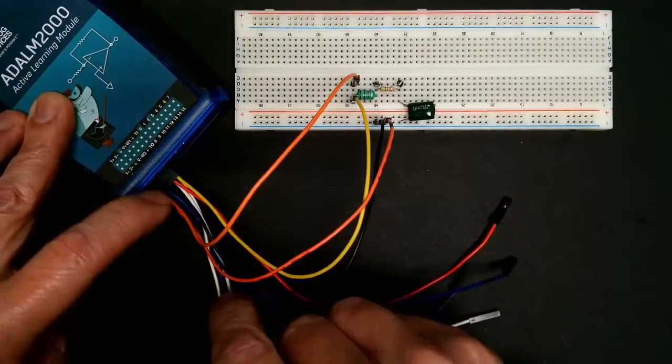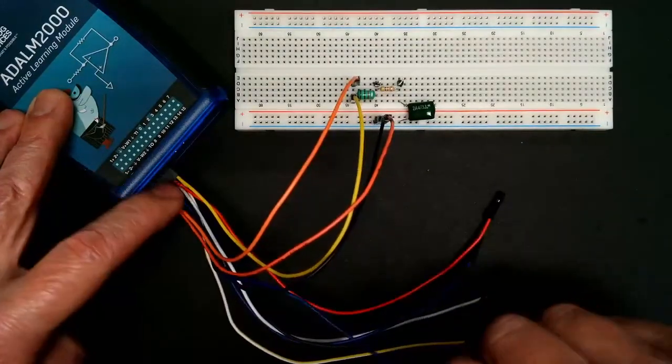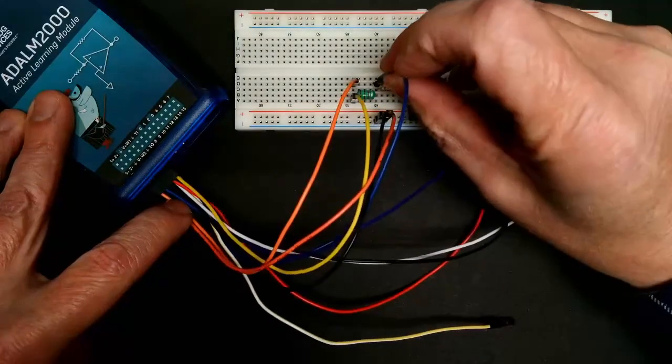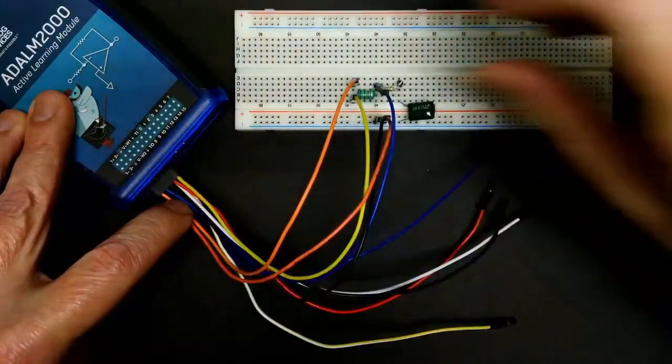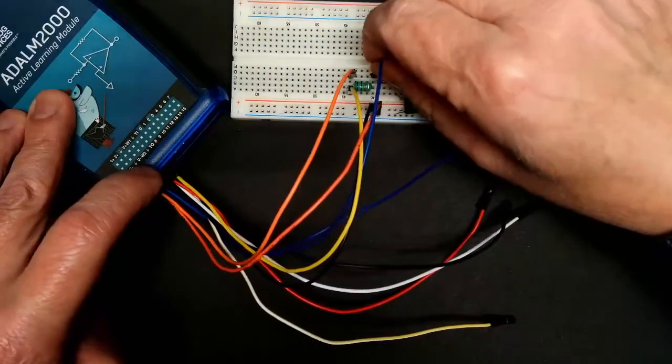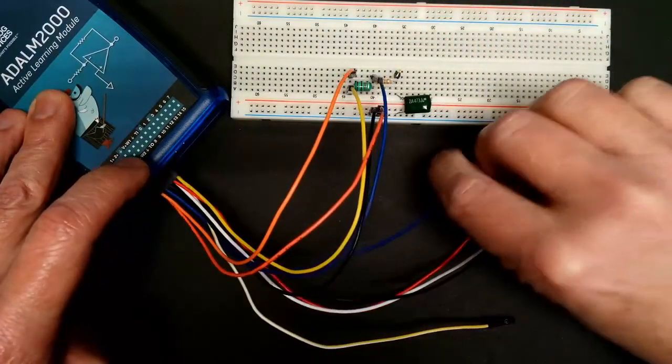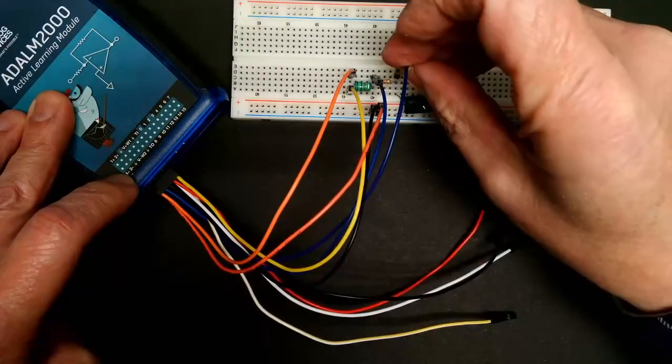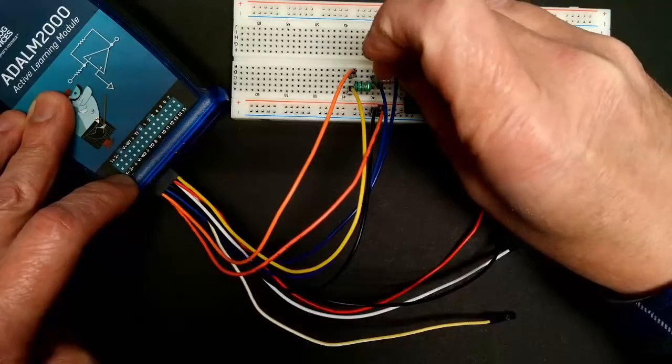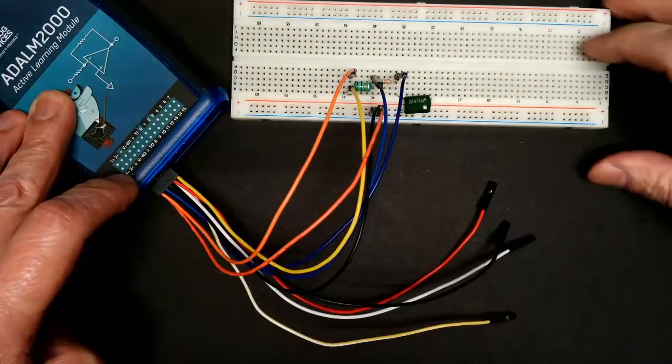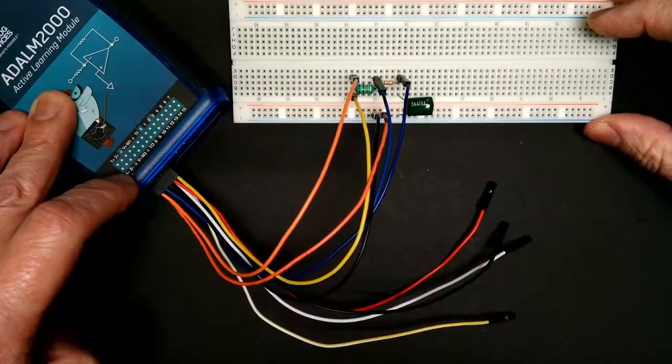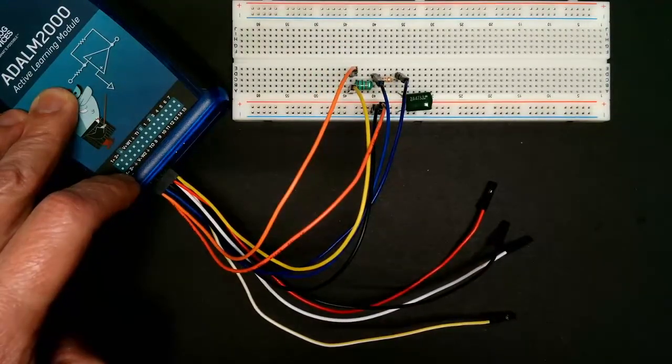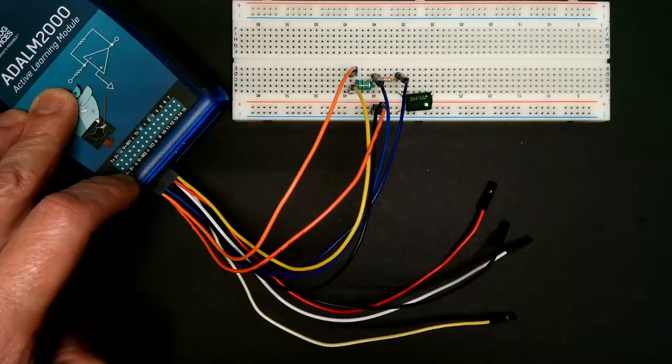For channel 2, I'm going to take the blue wire and attach that to the input side of the resistor, and then I'm going to take the complementary channel 2 negative input and attach that to the other side of the resistor. So now I have my circuit wired up, a little bit hard to see, but there it is, and next we'll go into the Scopy software and see how things work.